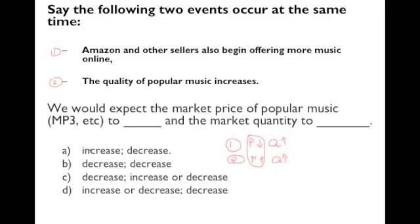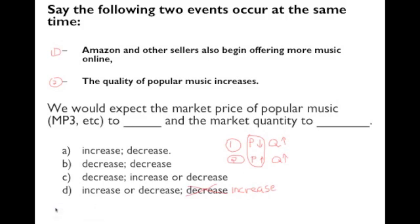So we're looking for an answer that says price is undetermined and quantity goes up. Going through the choices — increase, decrease, decrease, increase or decrease — none of the listed choices match. This is intentionally a trick question to make sure you know the correct reasoning. The right answer should say price is undetermined and quantity increases, but it's not listed here. This will be discussed in class, and in the actual exam the correct answer will be present.